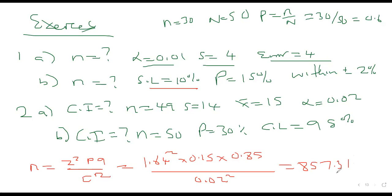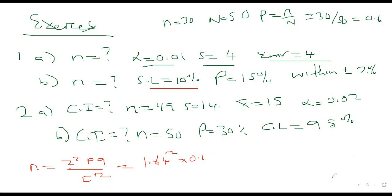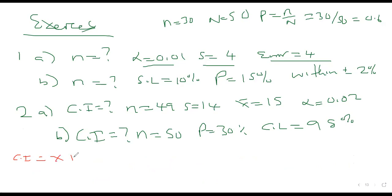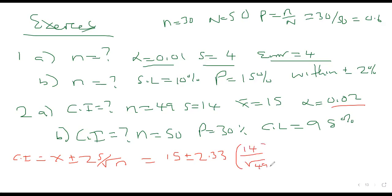For Part 2A confidence interval: mean ± z × (σ/√n). Mean = 15, Z at α = 0.02 (98% confidence) is 2.33, standard deviation = 14, √49 = 7, so standard error = 14/7 = 2. Confidence interval = 15 ± 2.33 × 2 = 15 ± 4.66. Lower bound = 10.34; upper bound = 19.66. We are 98% confident the true mean lies between 10.34 and 19.66.